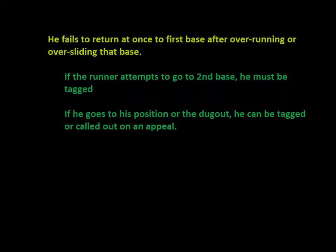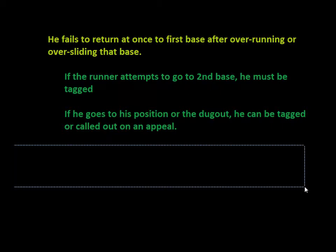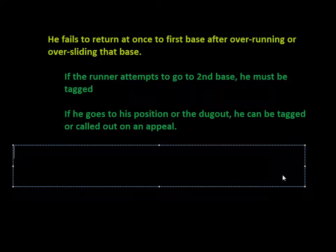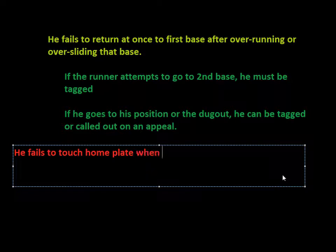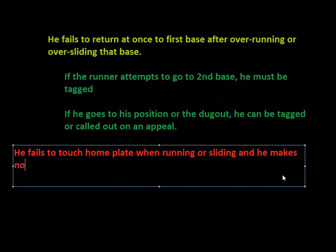The next way a runner can be called out is when, in running or sliding into home plate, he fails to touch it and makes no attempt to return to it. So he fails to touch home plate when running or sliding, and he makes no attempt to return to the base.